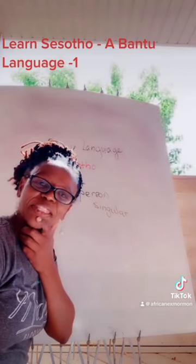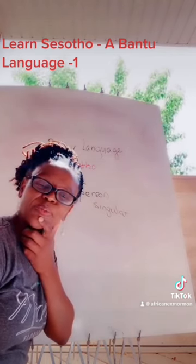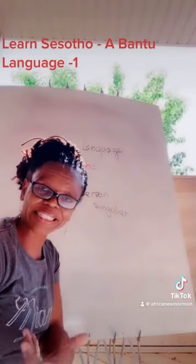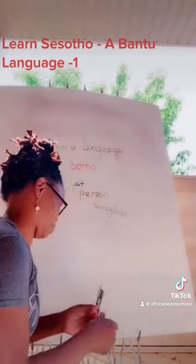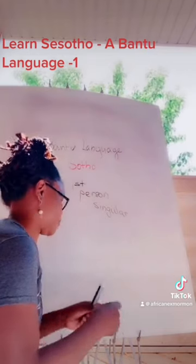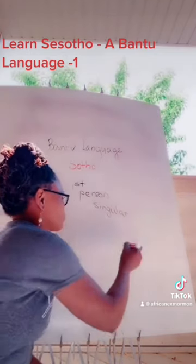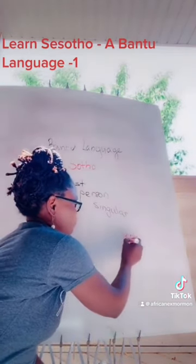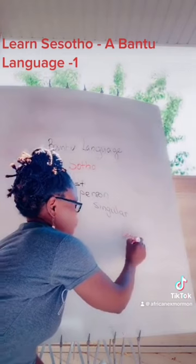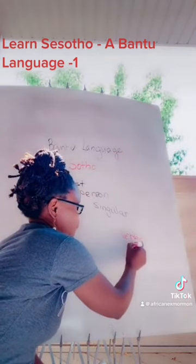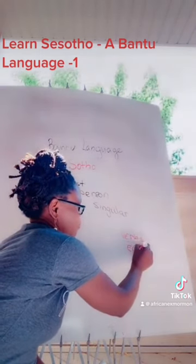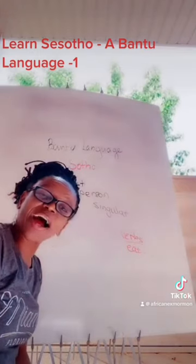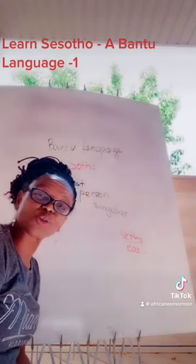Let's say, for example, you want to say 'I eat'. 'Eat' is 'ja' in Sesotho — 'ja'.